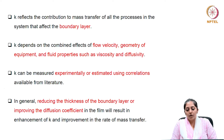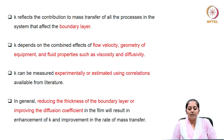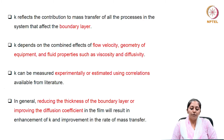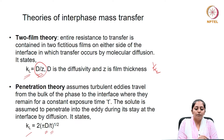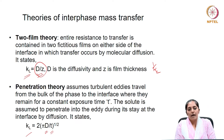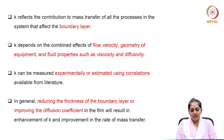K depends on the combined effects of flow velocity, geometry of the equipment, and fluid properties like viscosity and diffusivity. K is measured experimentally or estimated using empirical correlations available in literature. In general, reducing the thickness of the boundary layer or improving the diffusion coefficient in the film results in enhancement of the mass transfer coefficient. By two-film theory, the mass transfer coefficient is directly proportional to diffusivity and inversely proportional to film thickness. Once k is improved, the mass transfer rate is also improved.